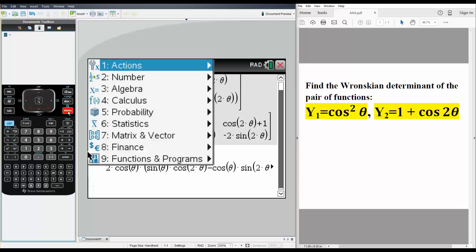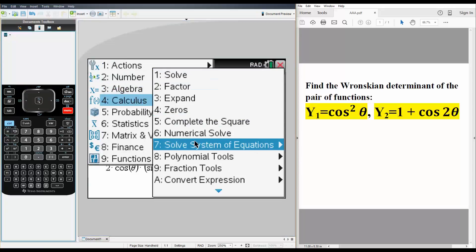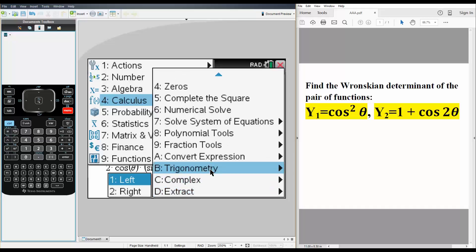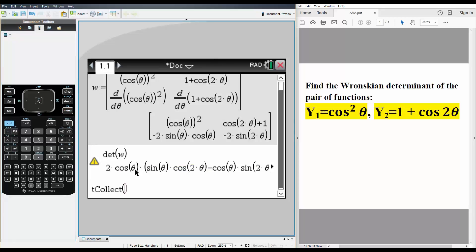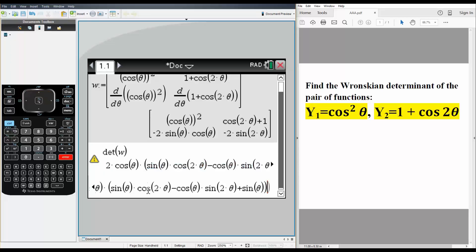We hit menu, go to algebra, then down to trig for trigonometry. We try collect - sometimes expand might be better, but we'll try collect first. We can go up, hit enter, and simply hit enter.